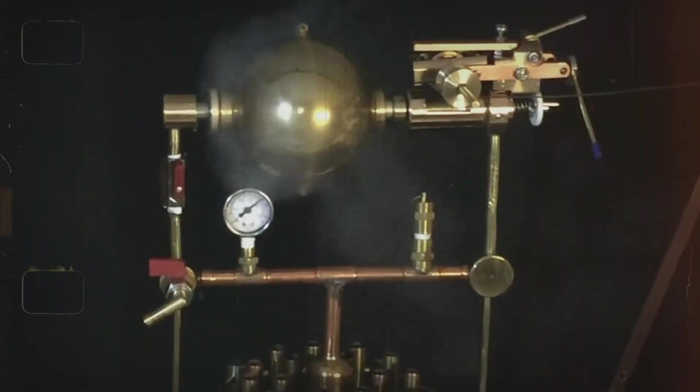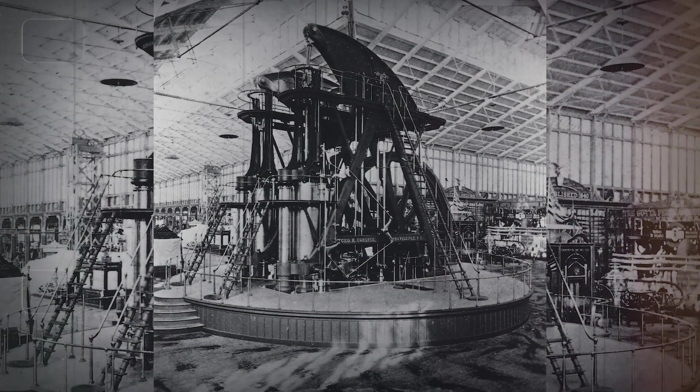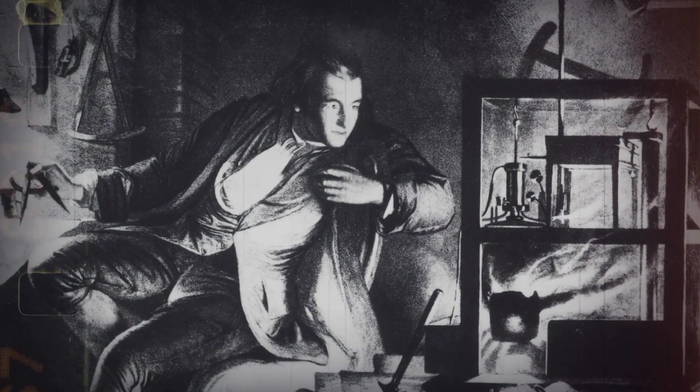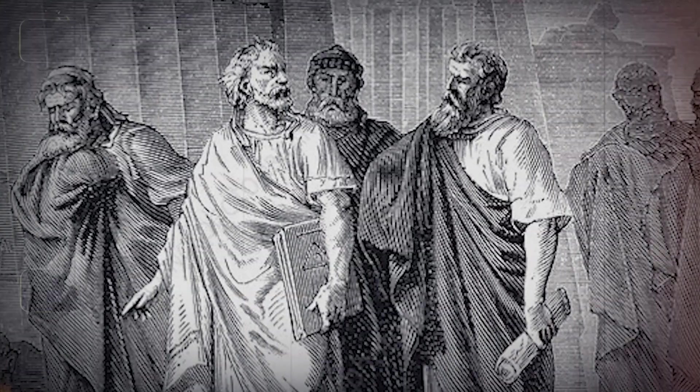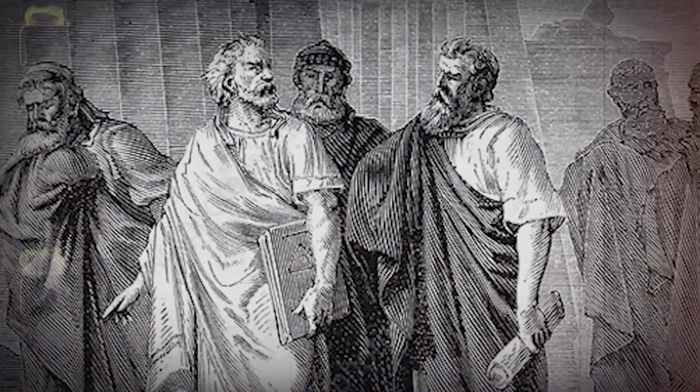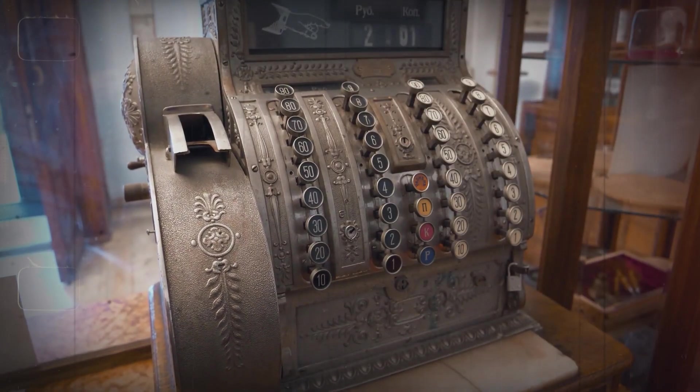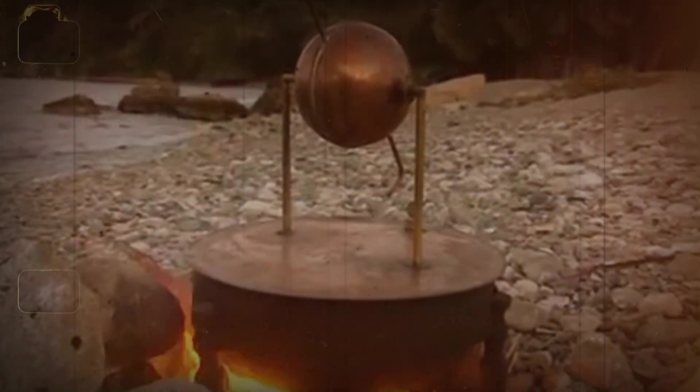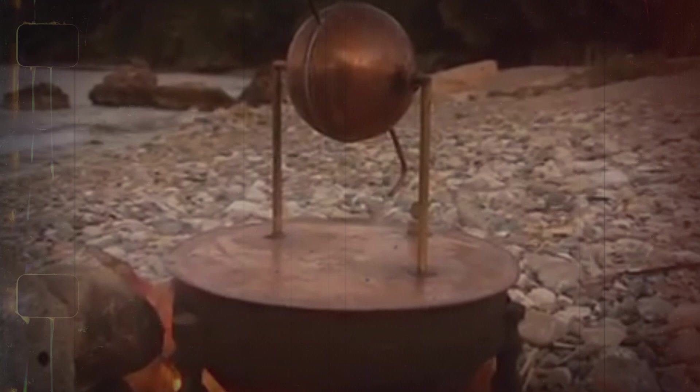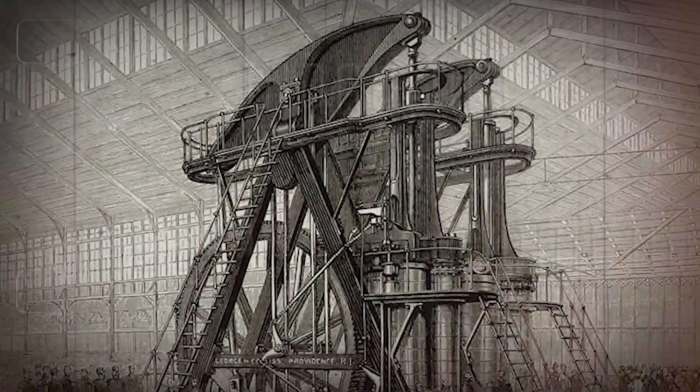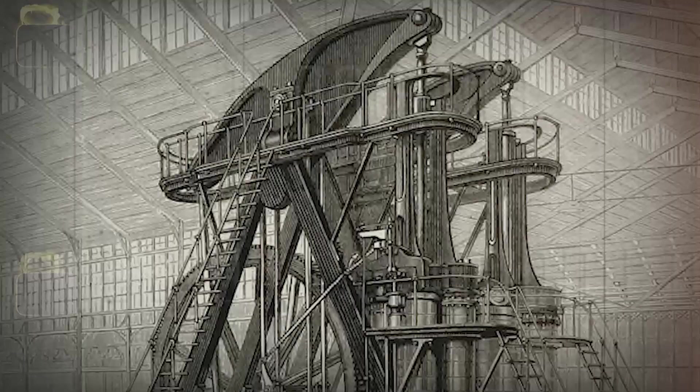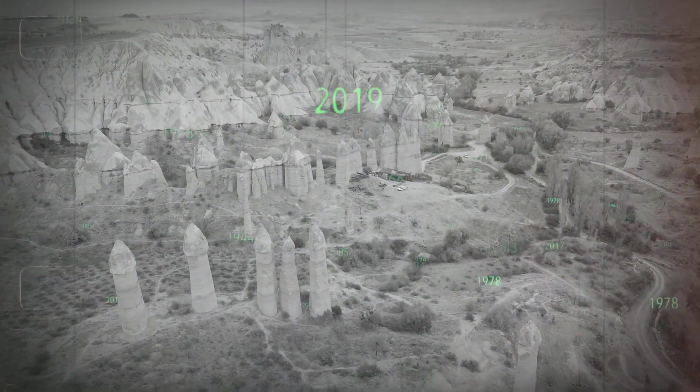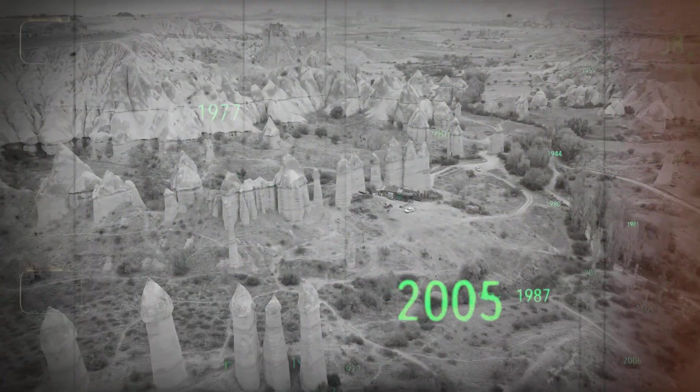Even though Hero's steam engine didn't change the world in his time, it's an important landmark in the history of engineering. It reminds us that the roots of modern technology were established long before the industrial revolution. The Aeolipile serves as a symbol of both the potential and limits of ancient technology, showing us how far we've come and how much was already understood in the distant past. It shows the continuity of technological progress, where ideas from the past are rediscovered and improved over many centuries.